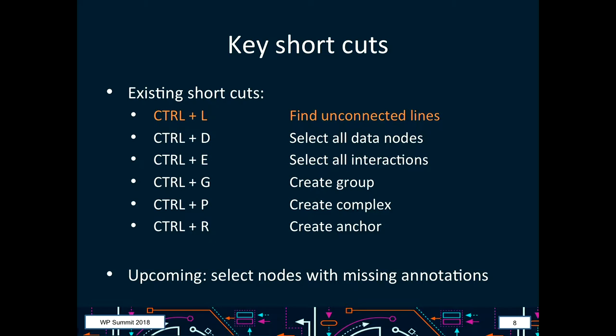There are several keyboard shortcuts that allow you to check the quality of things in the pathway. Control+L is the most important one in terms of unconnected lines. We have a lot of discussions about making line drawing work in a way that you can never have unconnected lines, and that's something we're working on — hopefully coming very soon. But at the moment, users are becoming more and more aware of this, so it's not happening as often. In a lot of past pathways, we have many unconnected lines, and with Control+L you can highlight all of those.